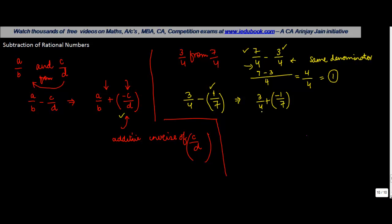Now, once you have this, what do you do? You take the LCM of these two numbers, which is 4 and 7. The LCM is 28. Now, 4 goes into 28 seven times. So 7 into 3 will give you 21 plus 7 goes into 28 four times. 4 into minus 1 is minus 4.